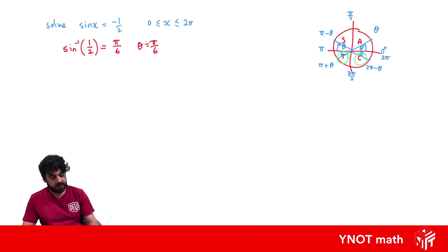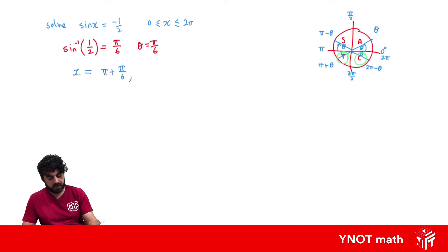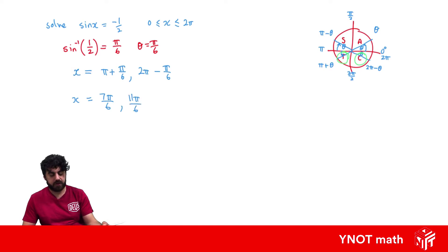Since we need a negative answer, we must have answers in the third and fourth quadrants. So x equals π plus our base angle of π/6 in the third quadrant, and 2π minus our base angle of π/6 in the fourth quadrant. This gives us answers x = 7π/6 and x = 11π/6.